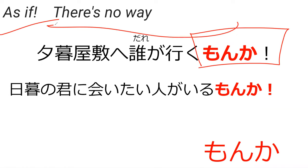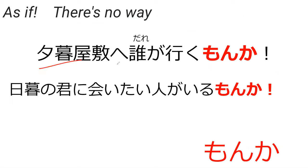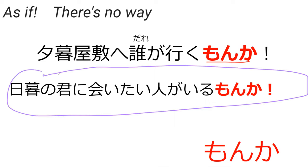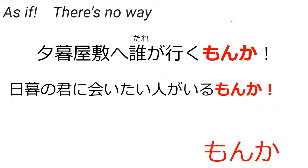Monka is like 'as if' or 'there's no way.' For example, can you read the first sentence? 'Yugure yashiki e dare ga iku monka' — who's gonna go to the twilight mansion? This is like a rhetorical question — you're making a statement. There's no way anyone is going. Is there such a person who would want to meet the lord of twilight? There's no way.